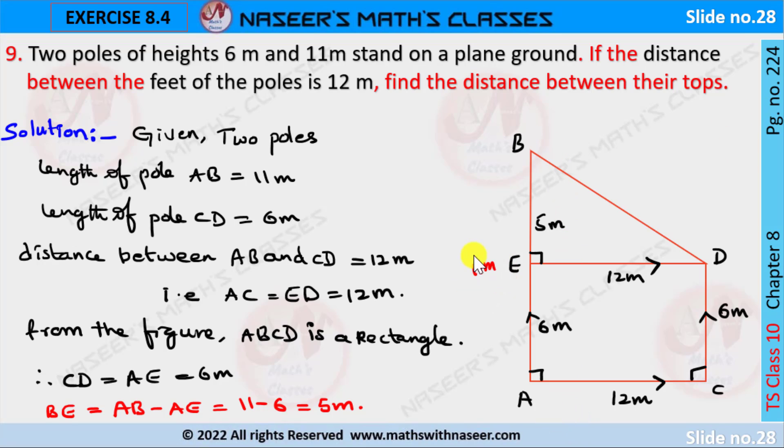According to the given problem, AB is a pole of height 11 meters and CD is a pole of 6 meters. The distance between their feet is 12 meters. Now we have to draw a parallel line to AC from D which touches the AB at point E. Then AD also becomes 12 meters.